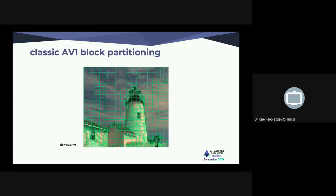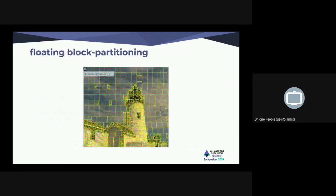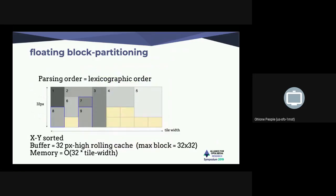In AV1, partitioning uses traditional aligned blocks. At low quality, you have fairly large blocks. What we want to do is allow blocks to not be aligned to 32x32 or 64x64 superblocks, but instead be placed anywhere on the image to better fit the geometry — floating partitioning, where you can put blocks everywhere. Syntactically it's not that different: when you transmit a block, you say here's the size for the next block, process in lexicographic order from top-right and top-to-bottom, and fill the gaps.